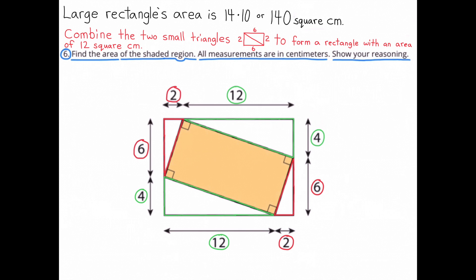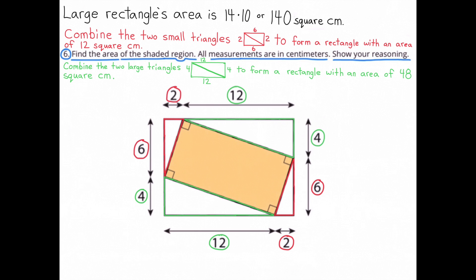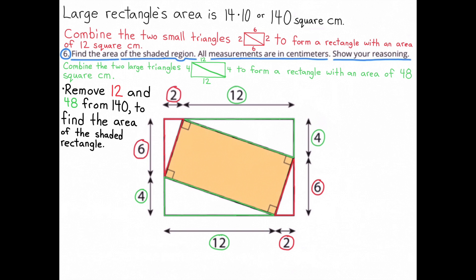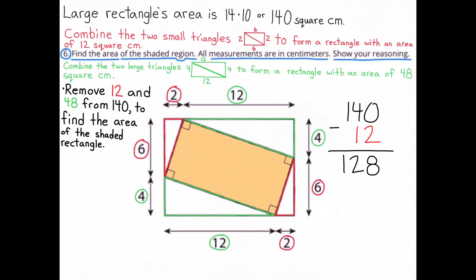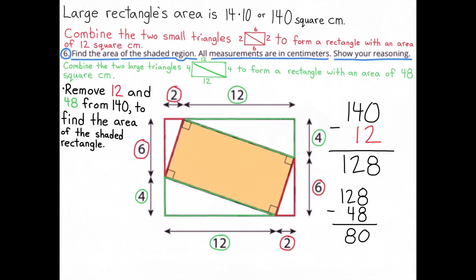Combine the two small triangles (2 by 6) to form a rectangle with an area of 12 square centimeters. Combine the two large triangles (4 by 12) to form a rectangle with an area of 48 square centimeters. Remove 12 square centimeters and 48 square centimeters from 140 square centimeters to find the area of the shaded region. The area of the shaded region is 80 square centimeters. Thank you.